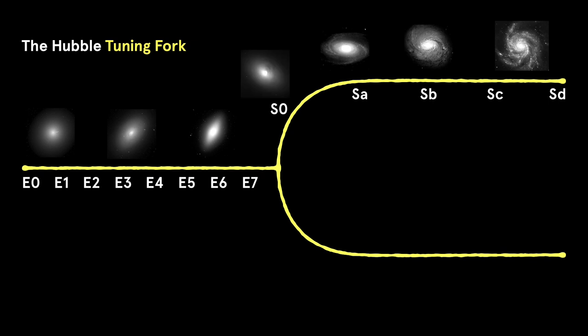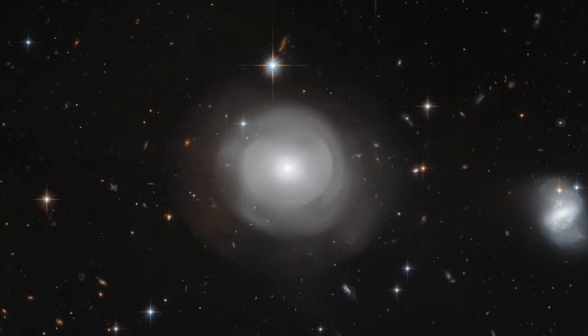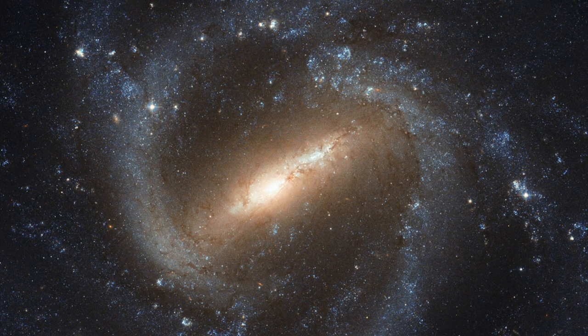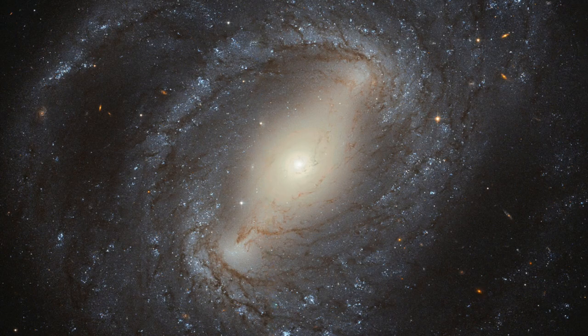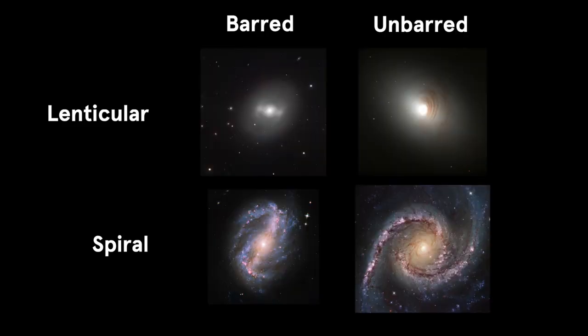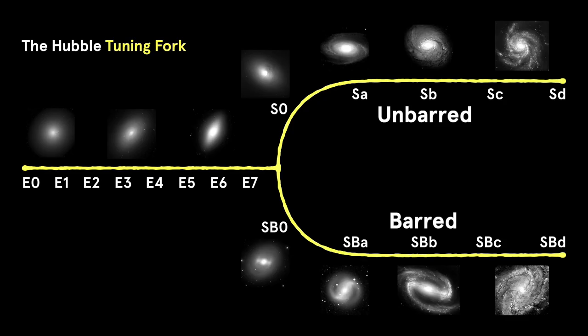The lenticular class have similarities to both spiral and elliptical galaxies. They have a prominent bulge and a prominent disk, but no spiral arms. The rectangular-looking structures found in the centres of many galaxies are called bars. Both lenticular and spiral galaxies also come in barred and unbarred varieties, giving rise to the two prongs of the Tuning Fork.